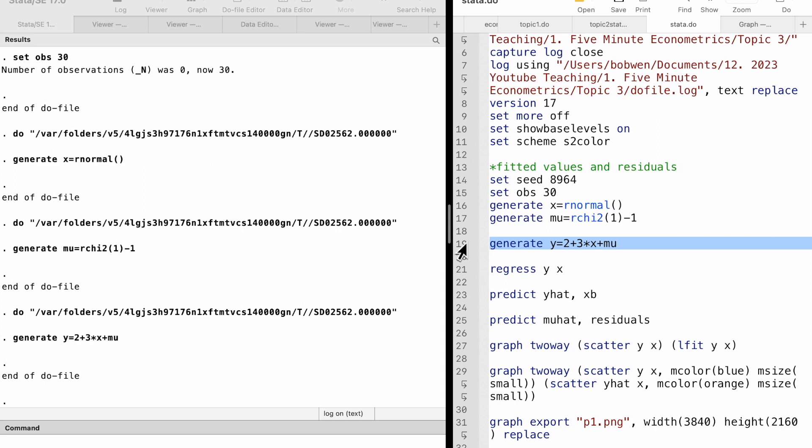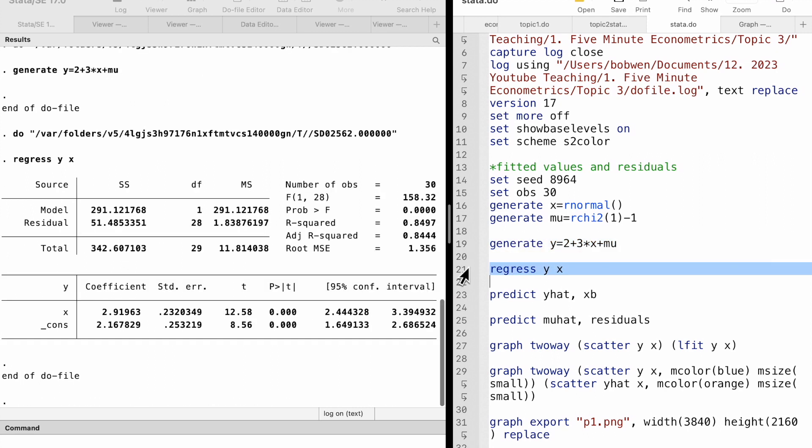which follows a relationship we assume y equals 2 plus 3 times x plus mu. Now we have the actual values of x and y. Next we regress y on x by OLS and obtain the fitted values of y.